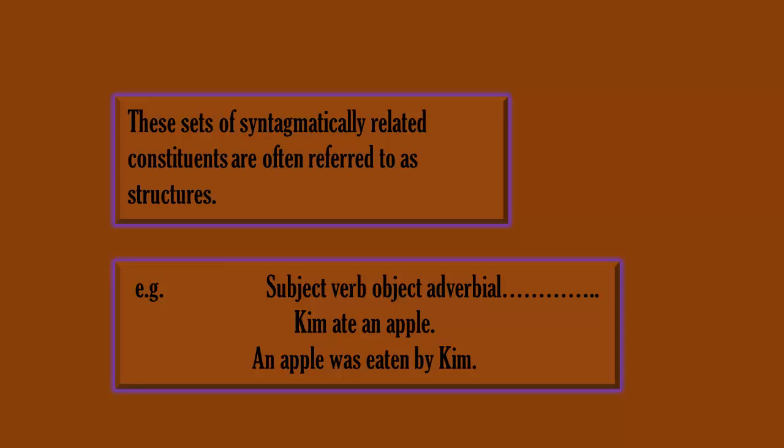Look at this example: 'Kim ate an apple.' And in the next sentence the order is reversed: 'An apple was eaten by Kim.' So meanings are created through the linear order in which signs are arranged together.